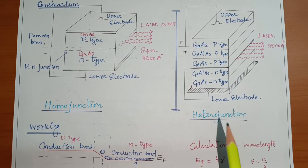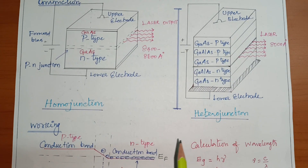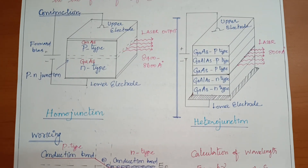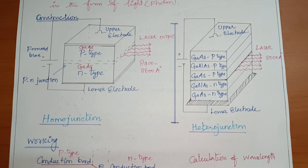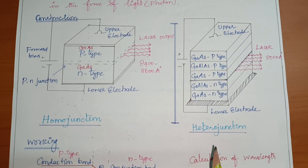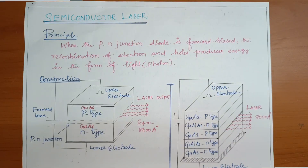The remaining working processes, power calculation, and characteristics of the hetero junction semiconductor laser are similar to those of the homo junction semiconductor laser.